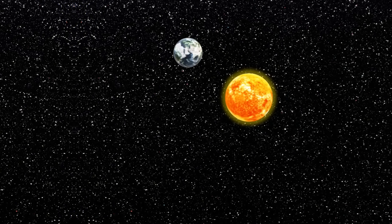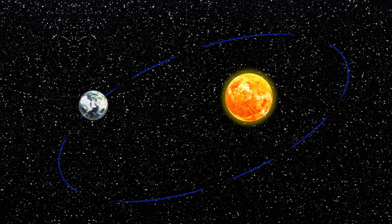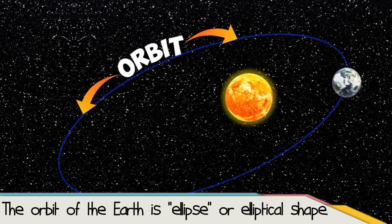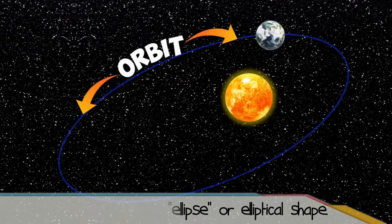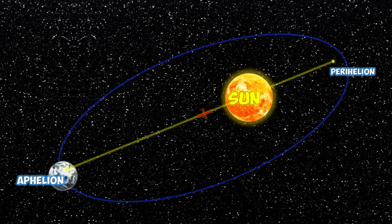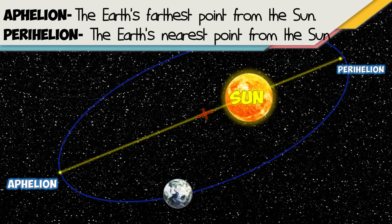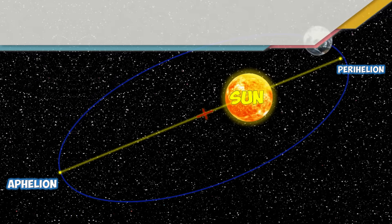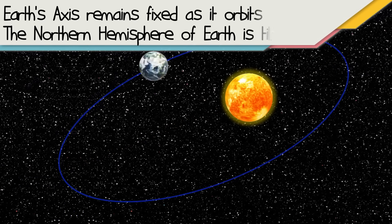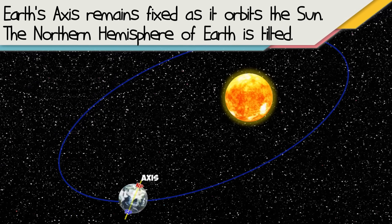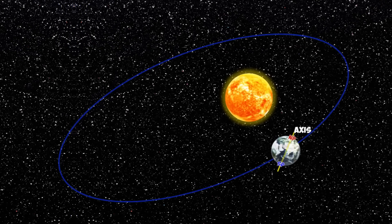The Earth travels around the Sun in a path called an orbit. The orbit is not a perfect circle but a slightly flattened circle called an ellipse or elliptical shape. This is why sometimes the Earth is far from or close to the Sun. The Earth's farthest point from the Sun is called aphelion, and the nearest point is called perihelion. As the Earth orbits the Sun, its axis remains fixed in space, so at one point the northern hemisphere is tilted toward the Sun.